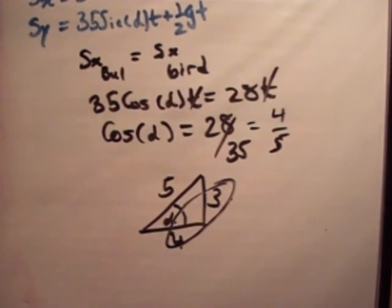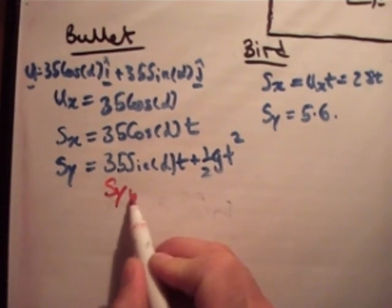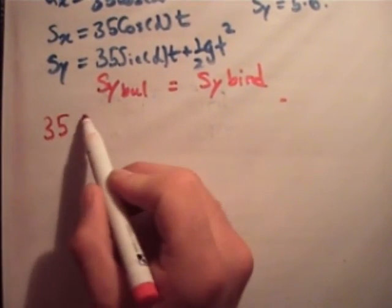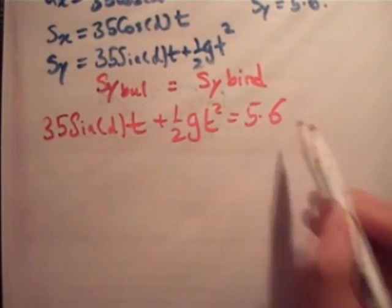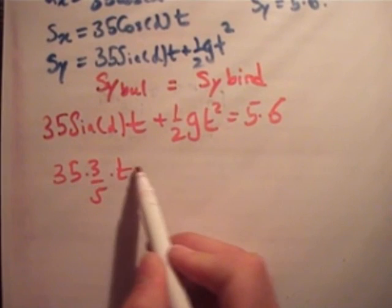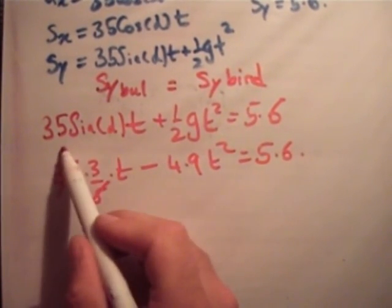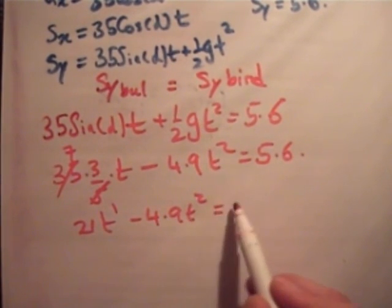The next part is to work out s sub y equals s sub y. So s sub y of bullet equals s sub y of bird. We're going to have 35 times the sine of alpha times t plus 1 half gt squared equals 5.6. But we know that sine alpha equals 3 fifths. So that's 35 times 3 over 5 times t minus 4.9 t squared equals 5.6. That simplifies to 21t minus 4.9 t squared equals 5.6.